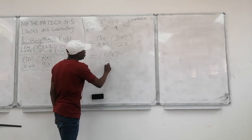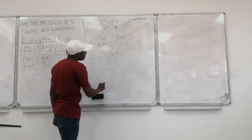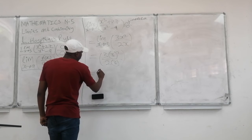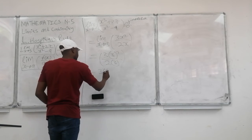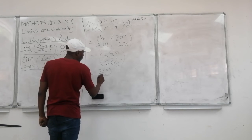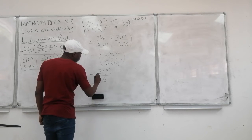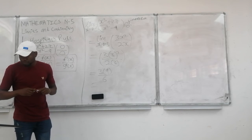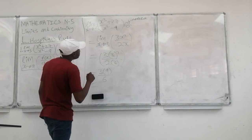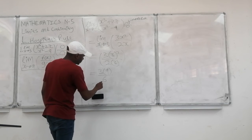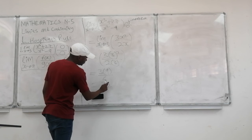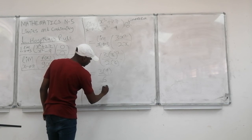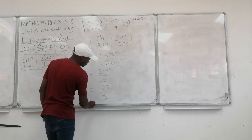Now substituting x equals 3: we get 3 times 3 squared over 2 times 3. That is 3 times 9 over 6, which equals 27 over 6. So our final answer is 27 over 6.